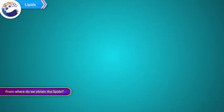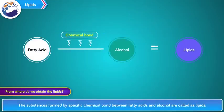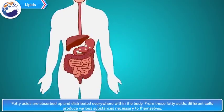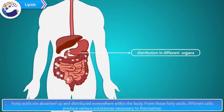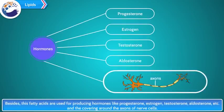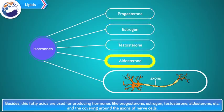Lipids: the substances formed by a specific chemical bond between fatty acids and alcohol are called lipids. Digestion of lipids is their conversion into fatty acids and alcohol. Fatty acids are absorbed and distributed throughout the body. Different cells produce various substances from fatty acids — for example, phospholipids, which are essential for producing the plasma membrane. These fatty acids are also used for producing hormones like progesterone, estrogen, testosterone, and aldosterone, and the covering around the axons of nerve cells.